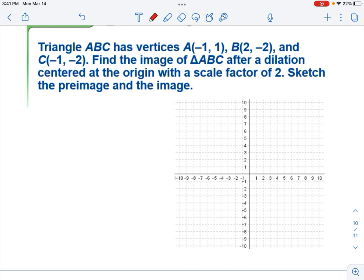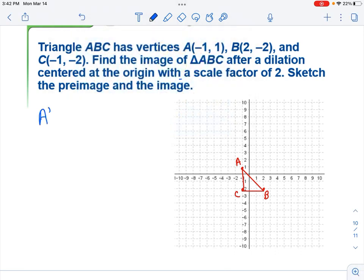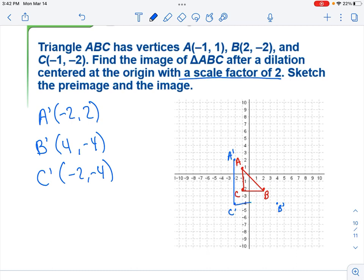All right, and if we do the last one, you can go ahead and start by graphing the original A, B, and C. And then we have a scale factor of 2, which means we just multiply X and Y by 2. So A prime is negative 2, 2. And I bet you can get it from there. And then we'll graph it. So negative 2, 2 is A prime. 4, negative 4 is B prime. And negative 2, negative 4 is C prime.